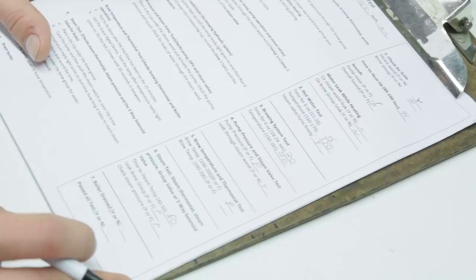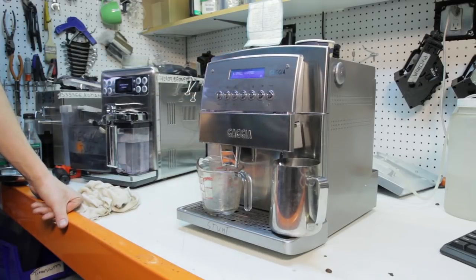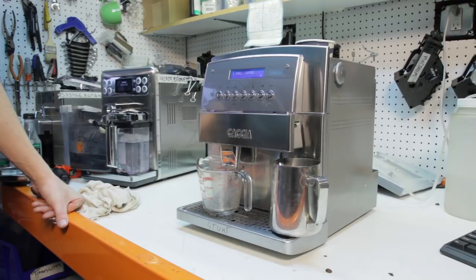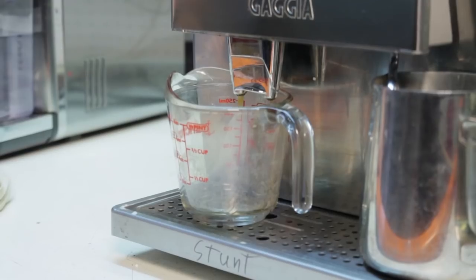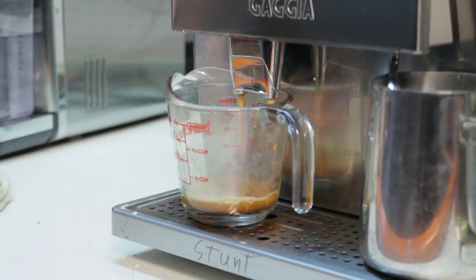For the superautomatics, it's a very similar process. But in that case, instead of just listening to the sound of the pump and the solenoid valve like for the classic, we'll be listening for the motors that turn the gears, the brew group, along with the grinder. And then we check the steam pressures and the brew temperatures in a different way. But still, it's a very accurate way we do it.